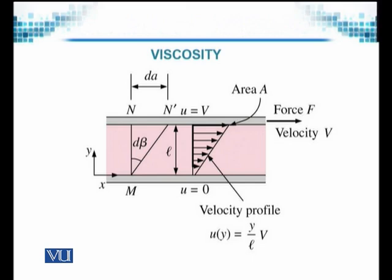In the picture there are two solid plates. The bottom plate, shown in grey, is fixed. The upper plate is movable and there is fluid between them. A force F is applied in a chosen direction. We have defined X as the horizontal direction and Y as the vertical direction, and we will discuss this in a little more detail.